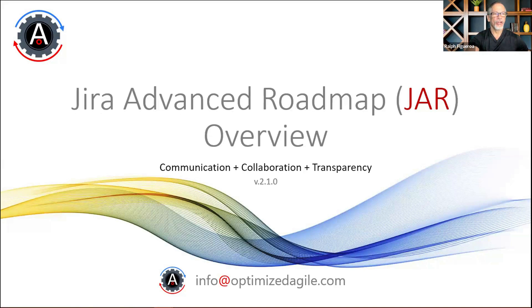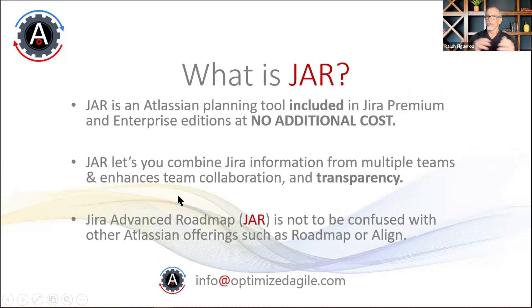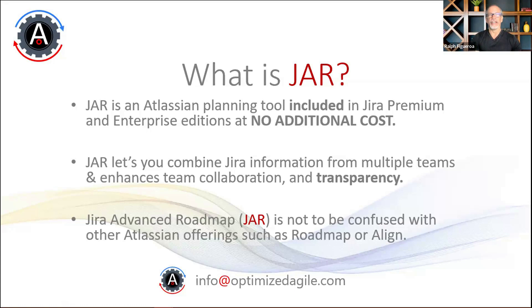In this overview we'll cover: what is JAR, the benefits of using it, then the hands-on demo, and then Q&A. JAR — or Jira Advanced Roadmap, which I shorten because it's a mouthful — is a planning tool included in Jira Premium and Jira Enterprise editions. Similar to other tools in the market like Structure or Big Picture, the interesting aspect is that it used to be a paid plugin, but about four years ago Atlassian decided to embed it inside the enterprise and premium editions of Jira.